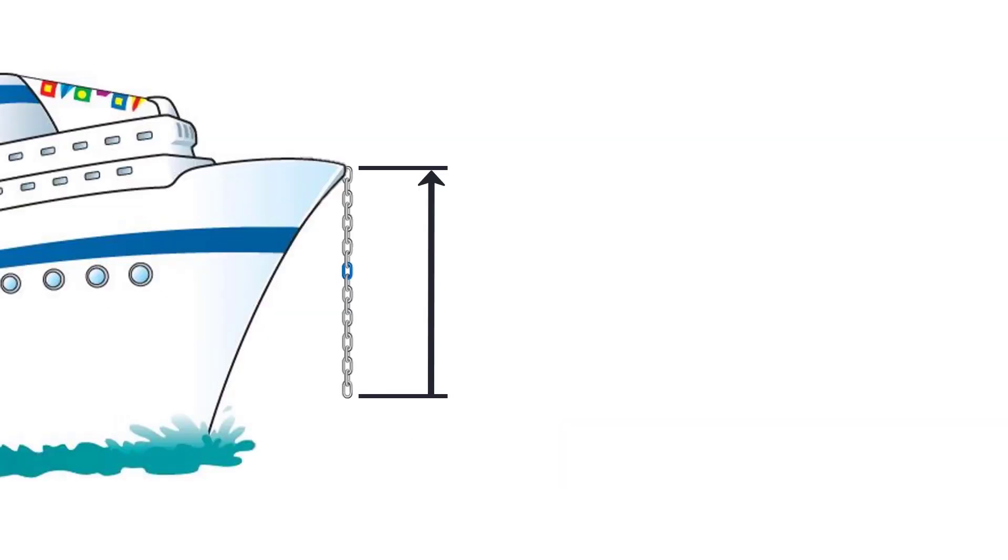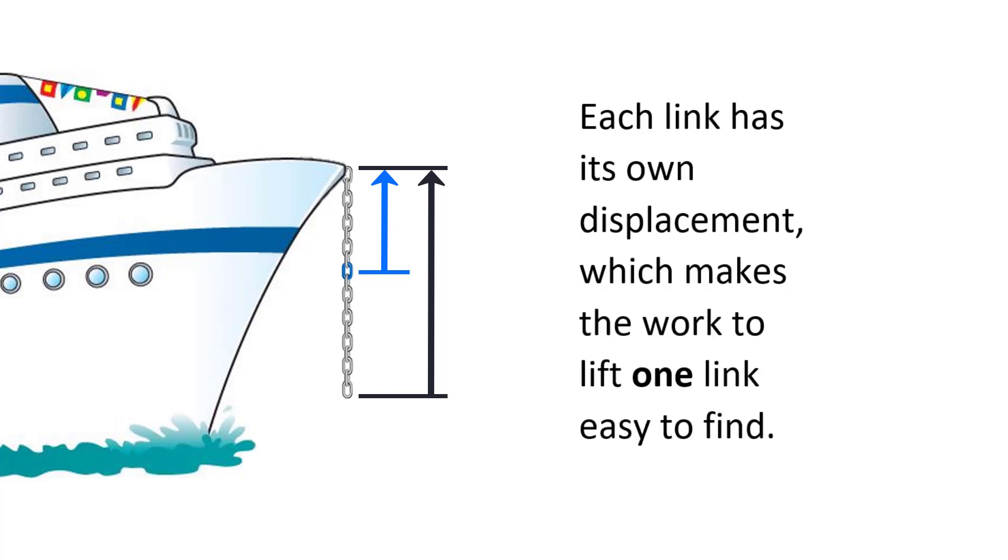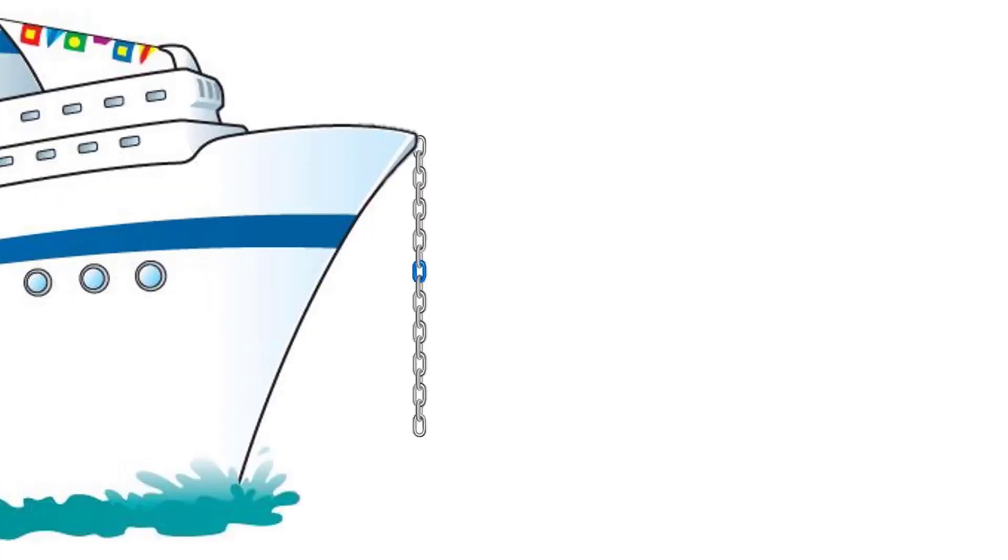The chain is made up of many small links. Each individual link has its own displacement. Considering one link at a time solves the problem of the varying distances that the different links move. For each individual link, the displacement is constant. To set up the integral, we start by understanding one link of the chain very well. I am going to focus on the one that is colored blue in the sketch. There is nothing special about this particular link. Whatever we say about this link should be true of all the other links as well.